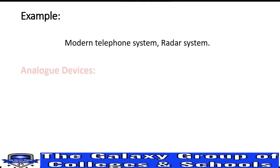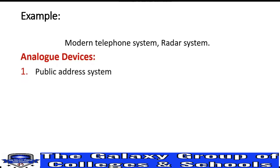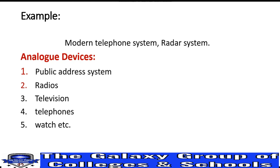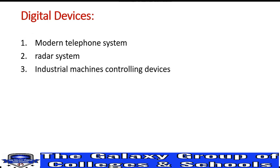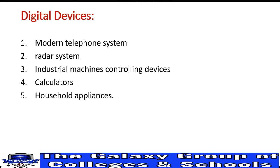Examples of analog devices include the public address system, radios, televisions, telephones, and watches. Examples of digital devices include the modern telephone system, radar system, industrial machines, controlling devices used in industry, calculators, household appliances, and medical equipment — these are all digital devices.